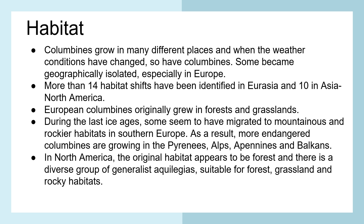European Columbines originally grew in forests and grasslands. During the last ice age, some seem to have migrated to mountainous and rockier habitats in Southern Europe. As a result, more endangered Columbines are growing in the Pyrenees, Alps, Apennines and Balkans. In North America, the original habitat appears to be forest, and there is a diverse group of generalist Aquilegias suitable for forest, grassland and rocky habitats.